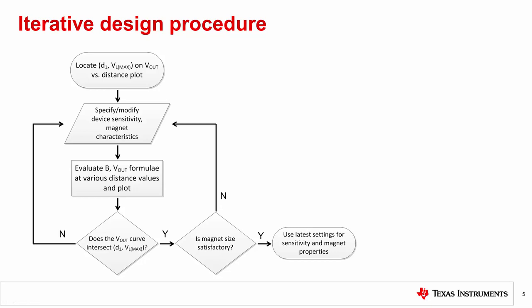With D1 and the supply voltage known, the first step is to locate the point D1 VL max on the Vout versus distance plot. VL max for the DRV5056 is about 200 millivolts below supply voltage.